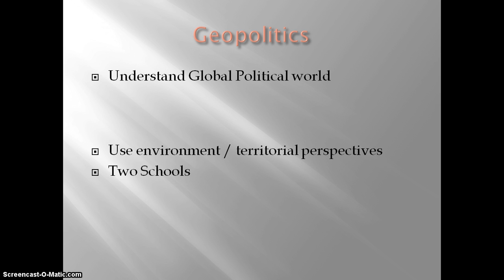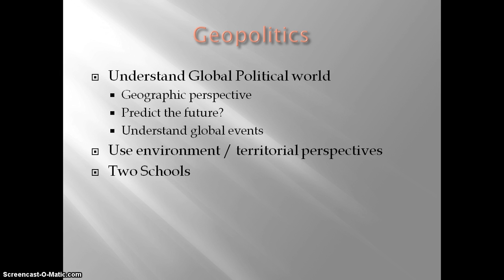When we talk about global geopolitics, it's our attempt to understand the global political world that we live in — looking at states and how they interact with each other from a geographic perspective. We're looking at states, where they're located, what their goals and ambitions are based on their geographic location, and trying to predict the future. Based on certain theories of geopolitics, what can we anticipate, and what can we do to either prevent certain events or better prepare ourselves?